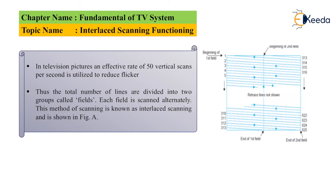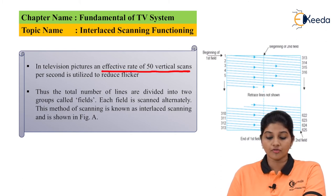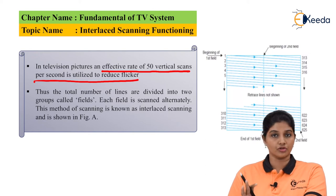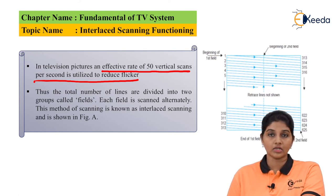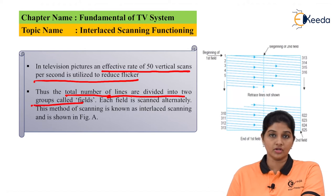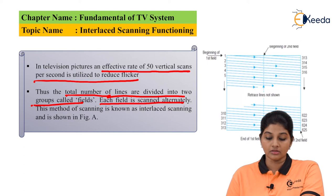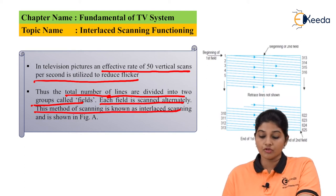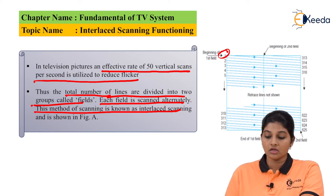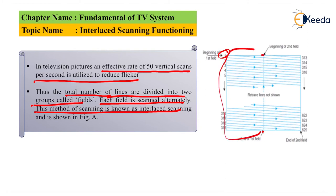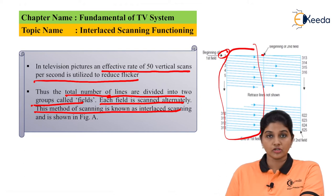The figure shows the diagram of interlaced scanning. The television picture is scanned at an effective rate of 50 vertical scans per second, which helps reduce flicker on the screen. From the figure, the total number of lines is 625, and these lines are divided into two groups called fields — the odd field and the even field. Each field is scanned alternately, and this method is known as interlaced scanning. In the diagram, the first field scanning begins, and after completing the first half, the first field ends and the second field begins. The electron beam then moves back upward and the second scanning starts.